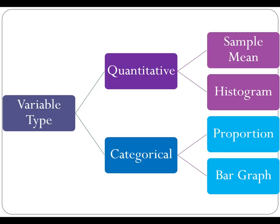Variable type is actually really important because this is going to define the types of measurements and graphics that we're going to be able to use and apply. One of the first things we always want to do is identify the variable type. If it's a quantitative measurement, it might be appropriate to use the sample mean and represent that graphically with a histogram. If that variable was a categorical variable, we'd probably want to look at it in terms of a proportion and look at a bar graph. Those different types of variables are going to define what graphics and measurements are available to accurately represent that information.